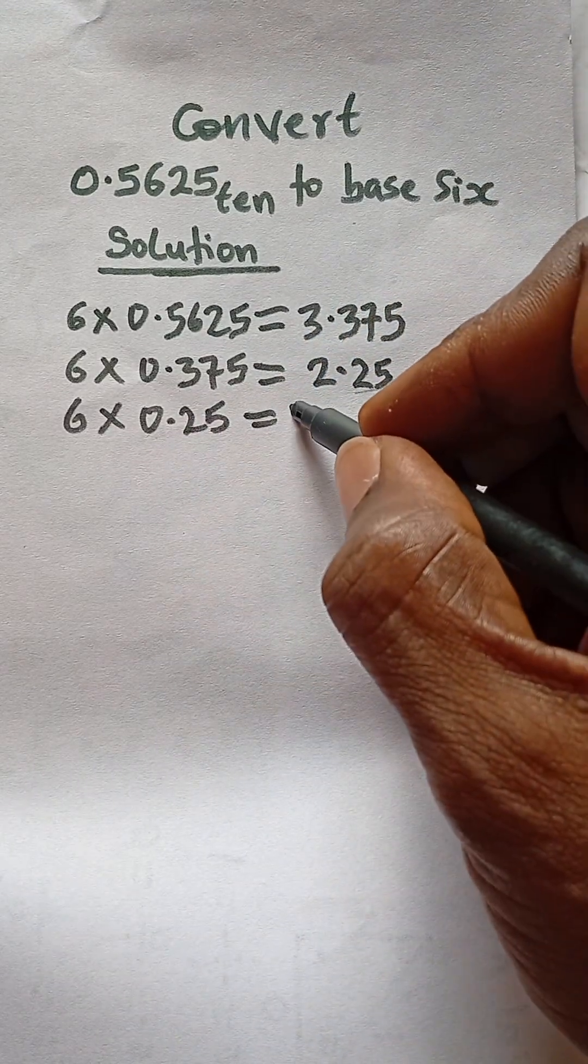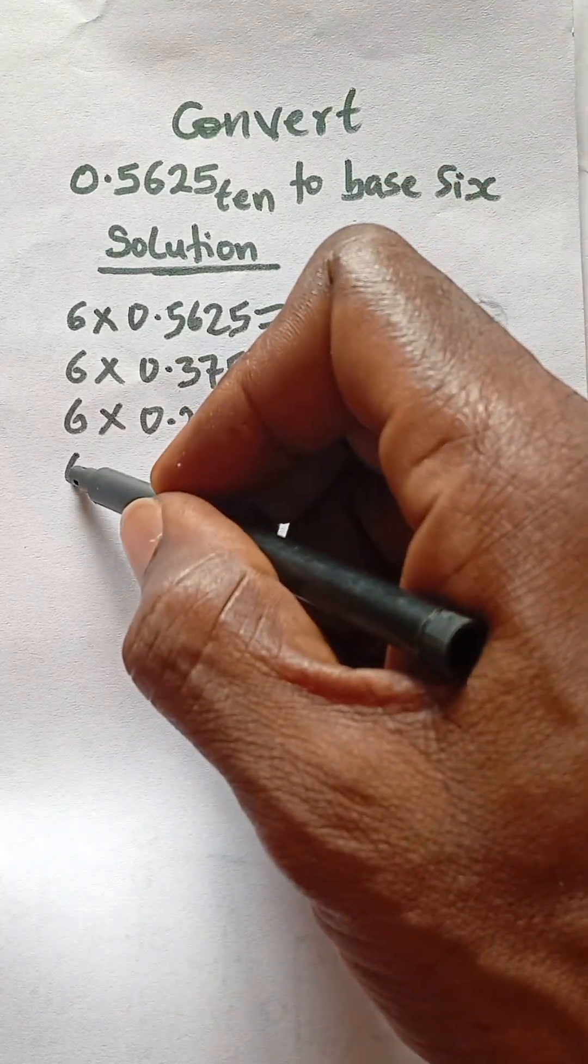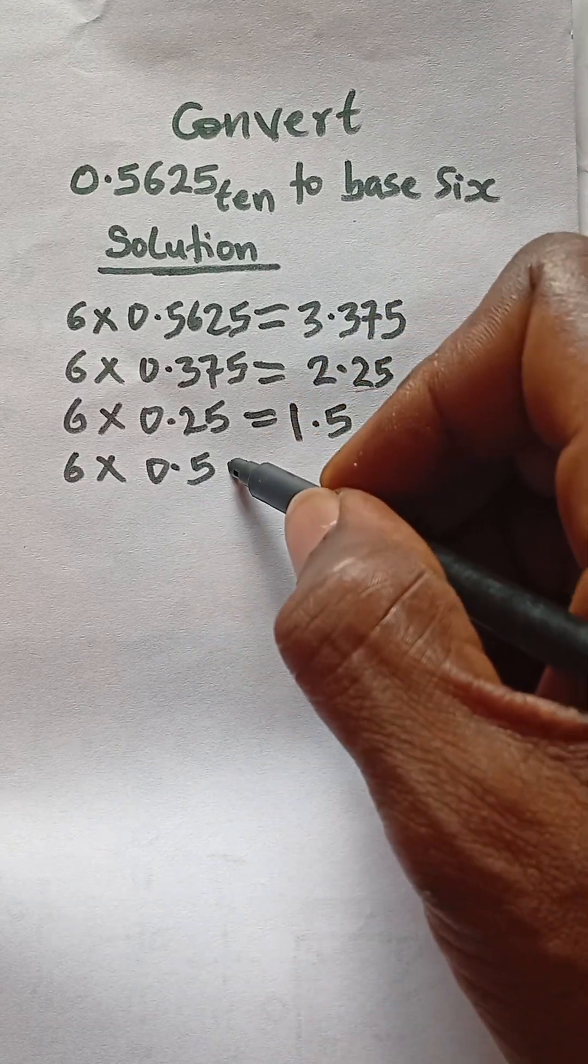The last part will be 6 multiplied by the decimal part which is 0.5, and that will give us 3.0.